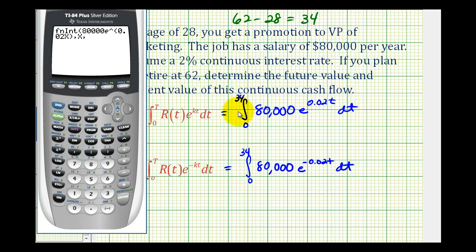The limits of integration are from 0, comma 34. So the future value of this continuous cash flow would be $3,895,510.93.